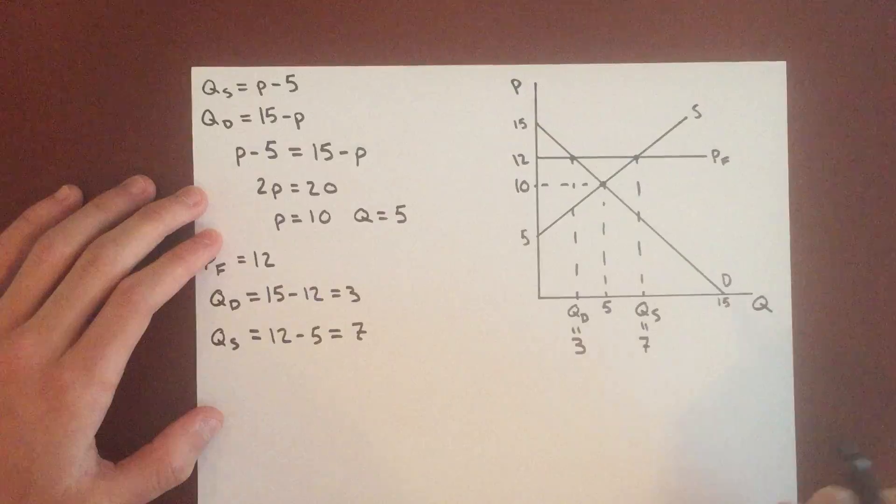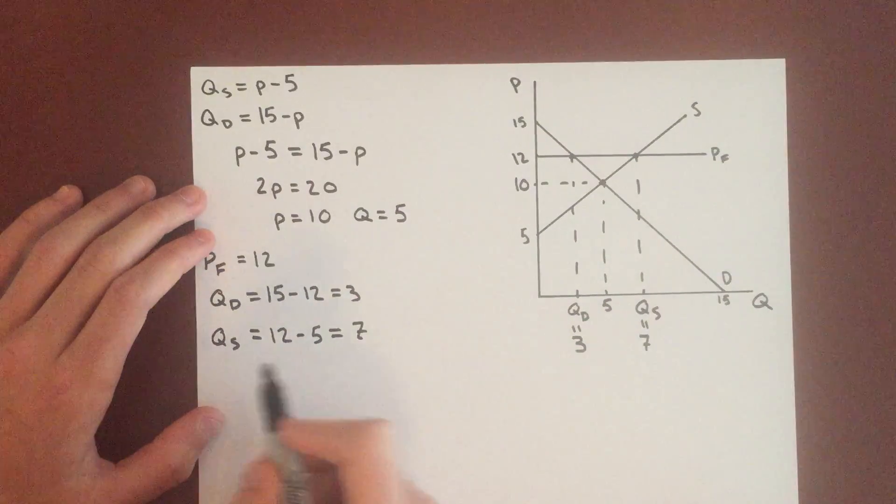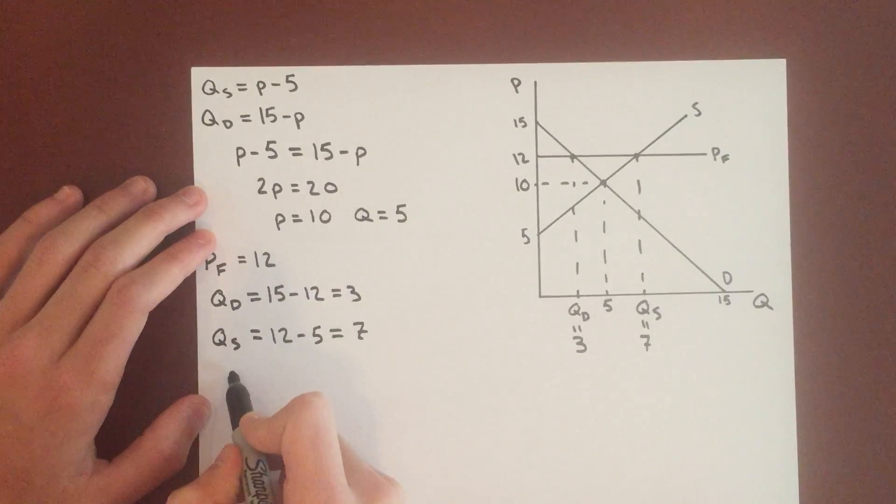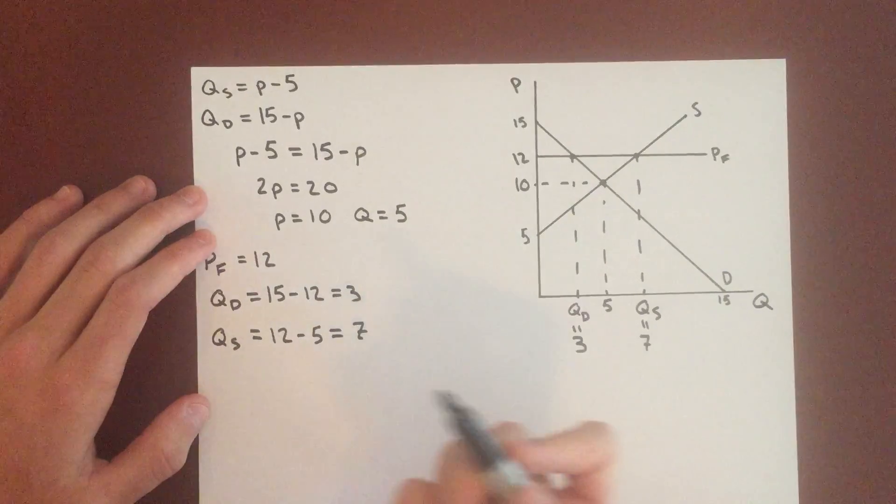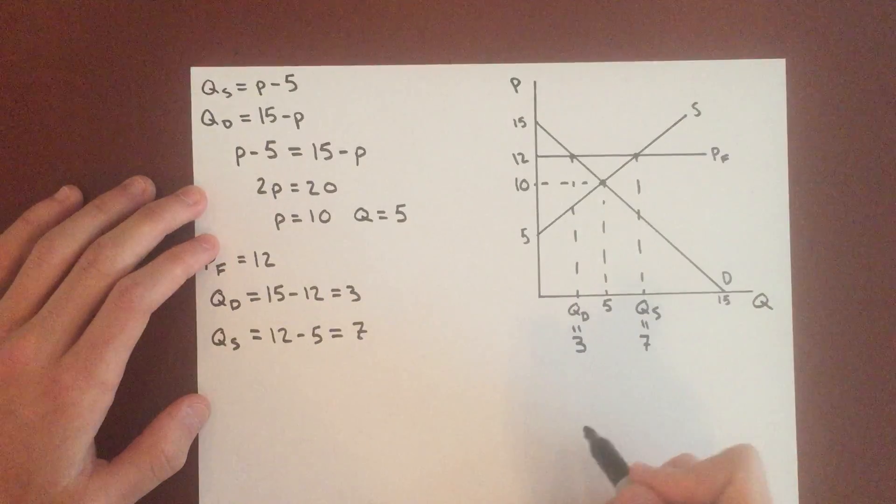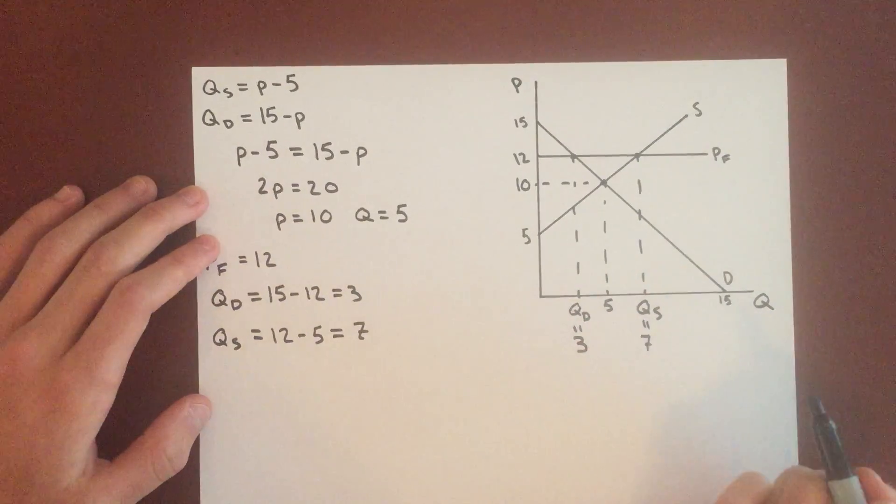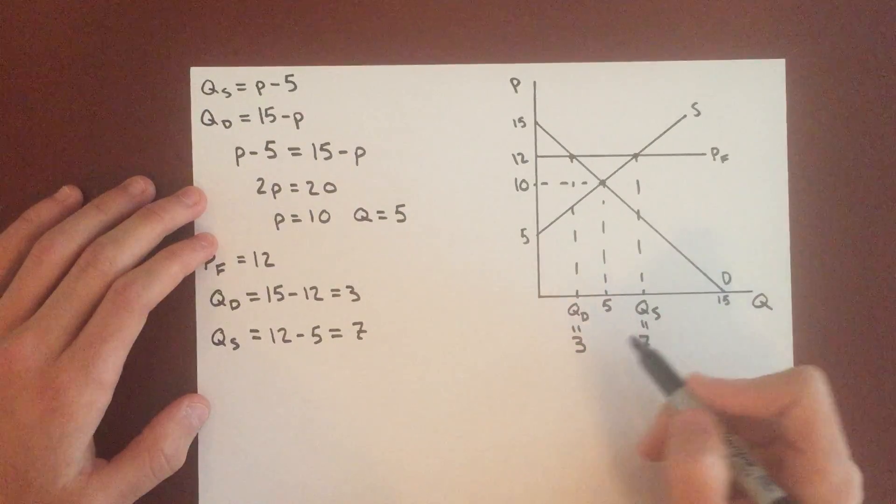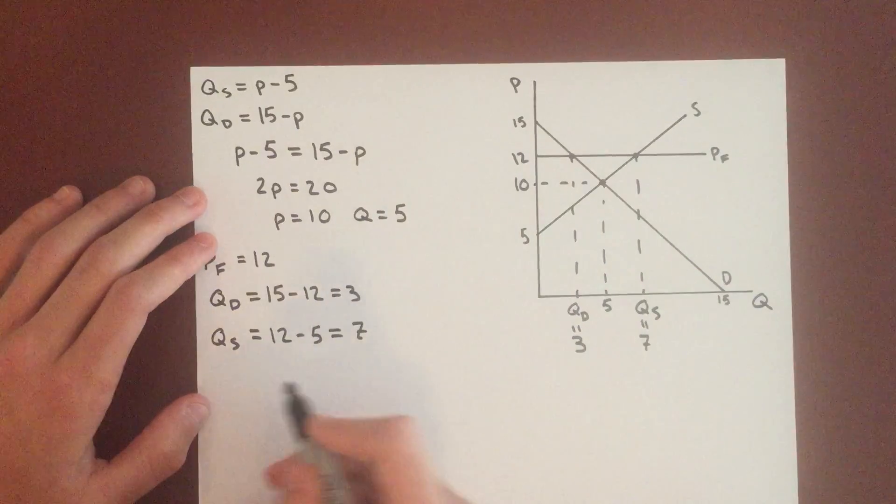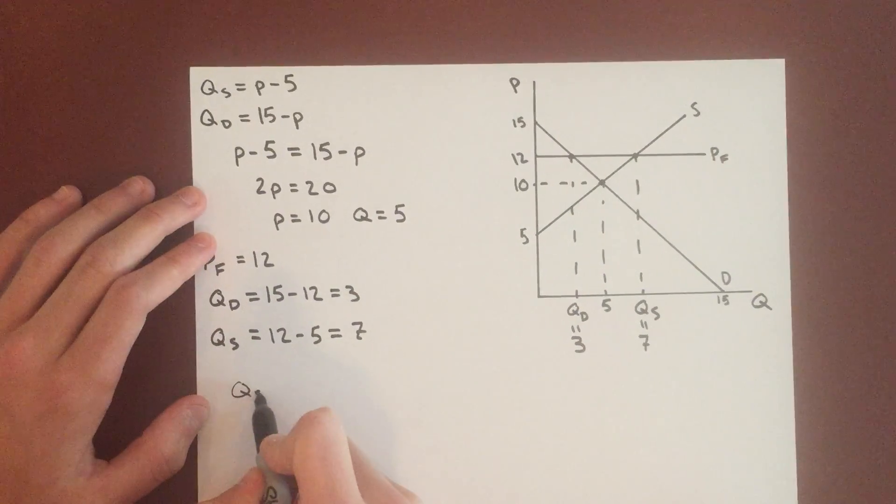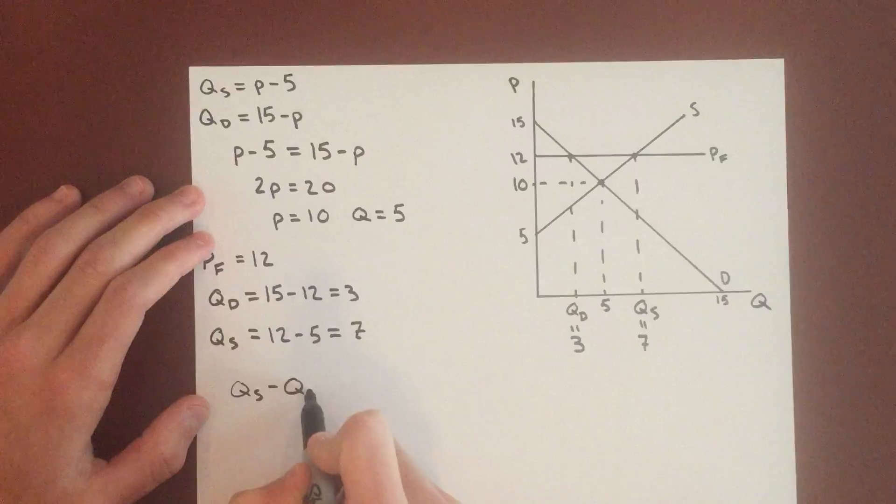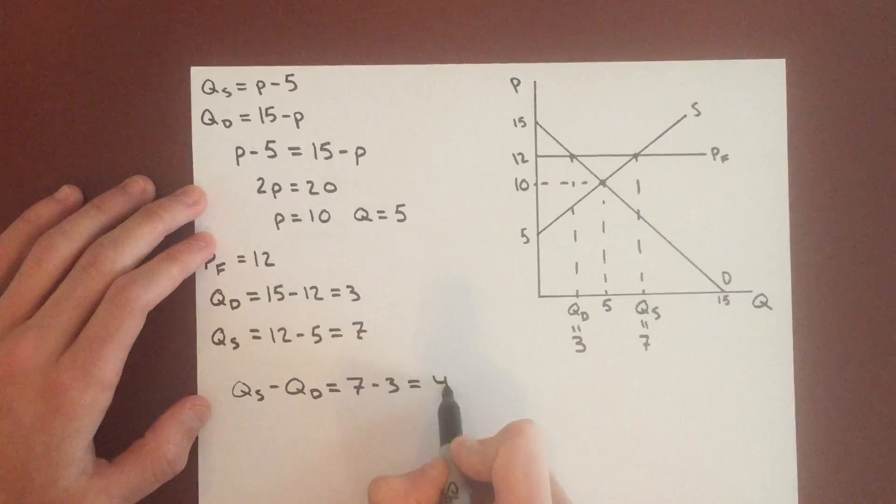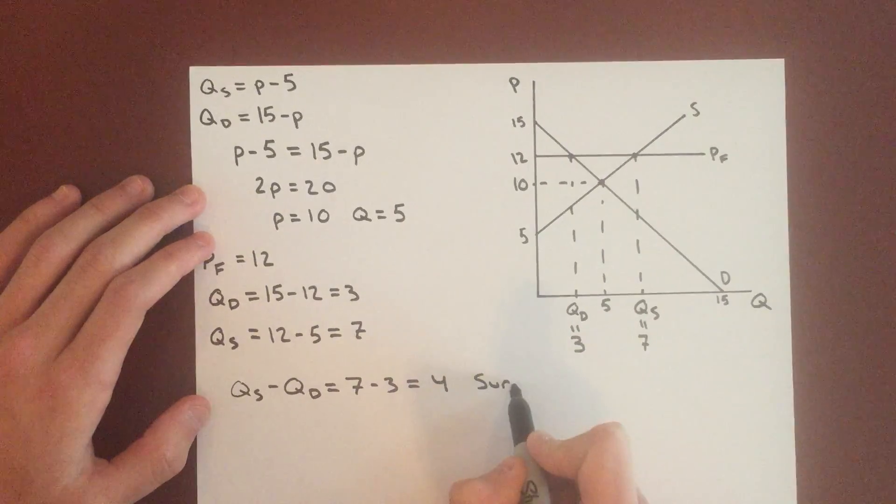So we know that these quantities don't match up, so we can say we have a shortage or a surplus. Now this will depend on whether quantity supplied or quantity demanded is greater. In this case quantity supplied is greater than quantity demanded. So we have a surplus. And how big is our surplus? Well we'll just take quantity supplied minus quantity demanded, very simple, 7 minus 3 equals 4. And so we can say we have a surplus of 4.